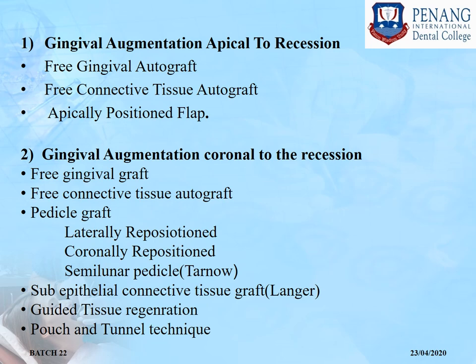Cairo et al. suggested a simpler classification of buccal recession based on clinical assessment of interproximal attachment levels: RT1, RT2, and RT3. RT1 is buccal tissue recession with no loss of interproximal attachment. RT2 is buccal tissue recession associated with loss of interproximal attachment less than or equal to buccal attachment loss. RT3 is buccal tissue recession associated with loss of interproximal attachment greater than the buccal attachment loss.